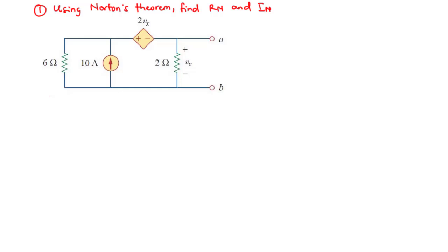In this lesson, we are going to consider linear circuits involving dependent sources and we are going to use Norton's theorem to find the Norton's resistance as well as the Norton's current in the circuit. Like we did for Thevenin's theorem, first we deactivate all independent sources, then we introduce either a 1V source or a 1A current source between the two terminals to find Rn.